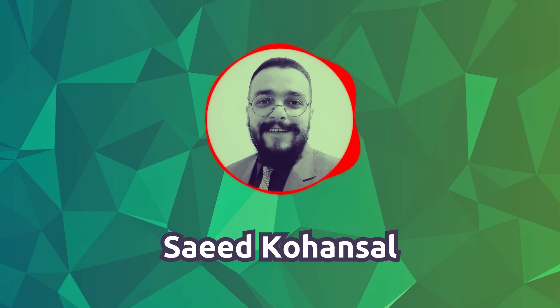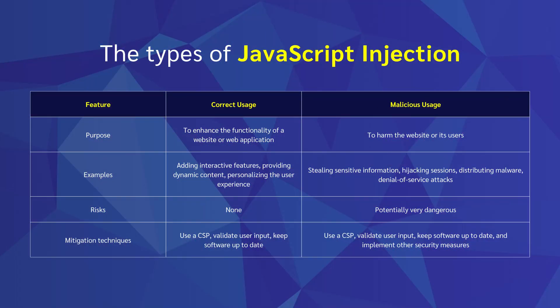JavaScript injection can be used for two purposes: correct usage and malicious usage. I created a table that summarizes the differences between the two. The correct usage is to enhance the functionality of a website or web application. When used correctly, JavaScript injection can be a powerful tool, but it is important to use it safely and securely to prevent attackers from exploiting it for malicious purposes.